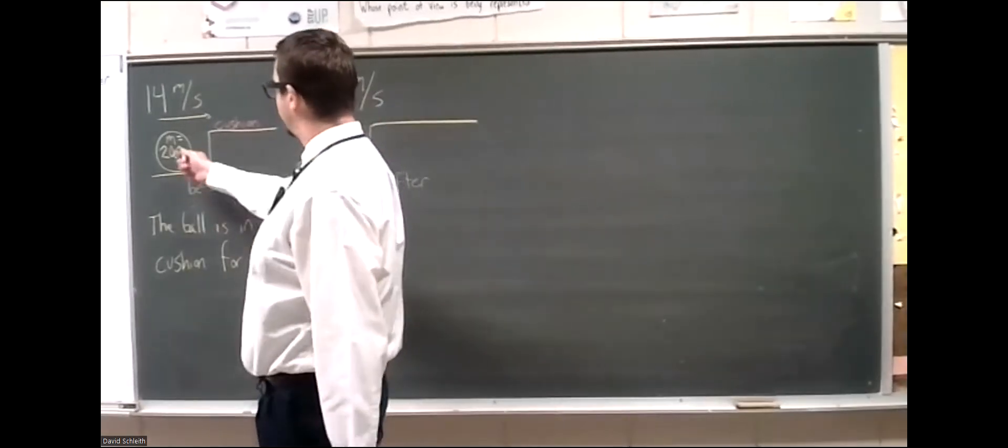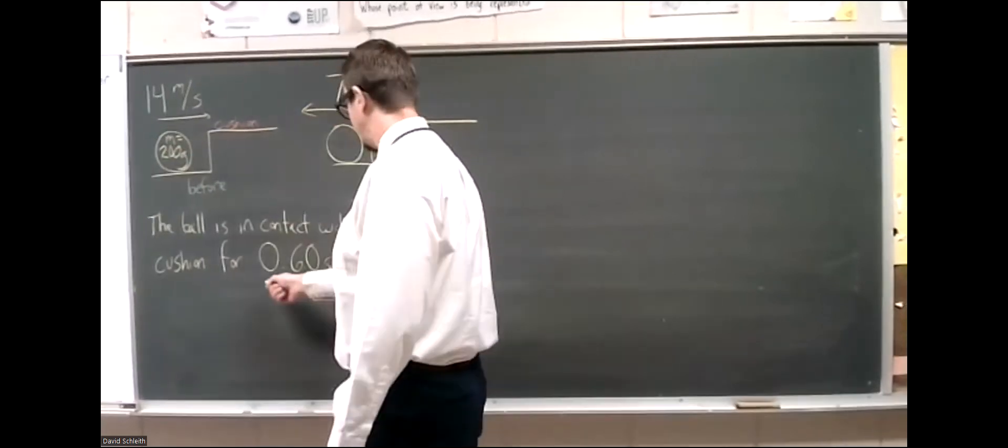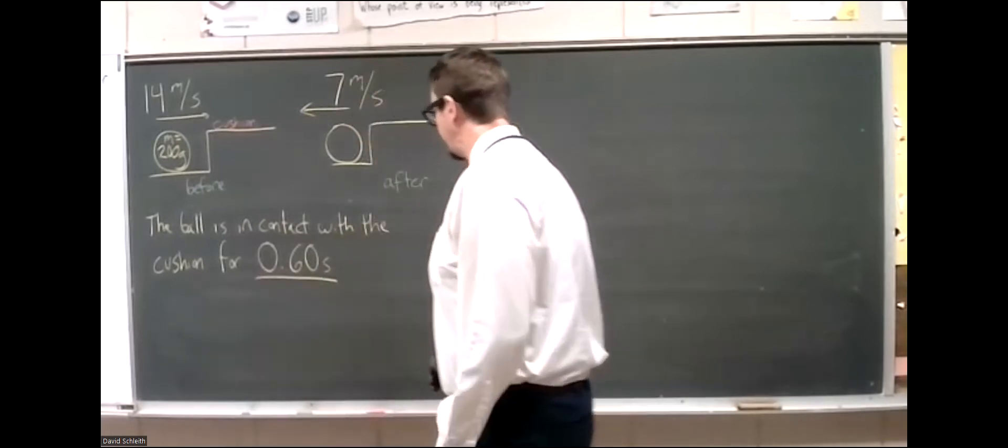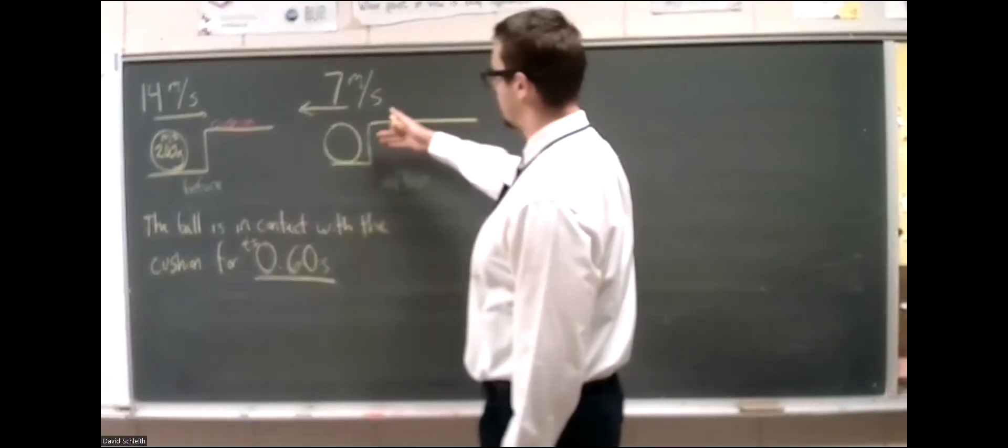So we've got ball of mass 200 grams traveling at 14 meters per second. It's going to run into the cushion in contact for 0.6 seconds, so we call that T for time. We're solving for the average force delivered.